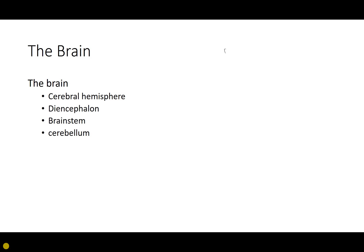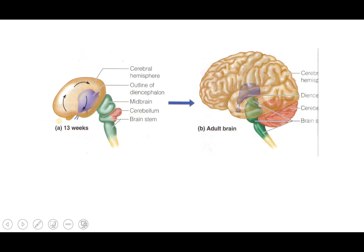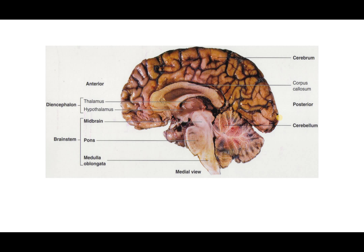The brain has four parts: the cerebral hemisphere, the diencephalon, the brain stem, and the cerebellum. Here we're seeing a brain at 13 weeks gestation, and on the right side is the adult brain, color-coded so you can see the different parts. The gold is the cerebrum, the purple middle part is the diencephalon, the green is the brain stem, and the red is the cerebellum.